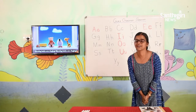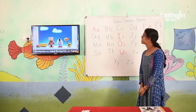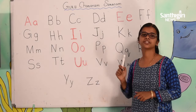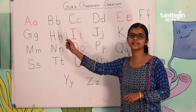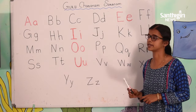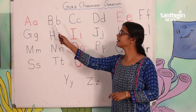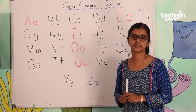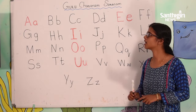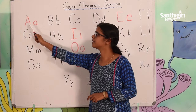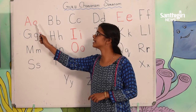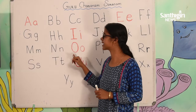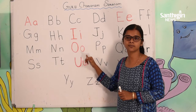Now let's start our class. There are 26 letters in the English alphabet. Five are vowels and the rest 21 are called consonants. For each alphabet, there is a capital letter and a small letter.